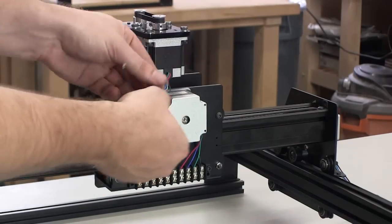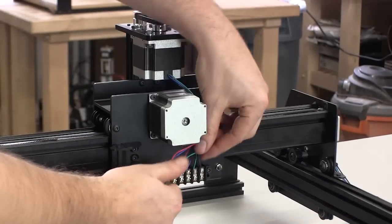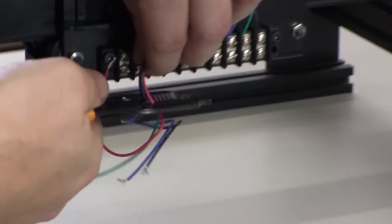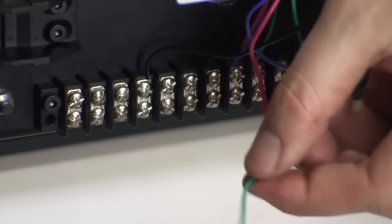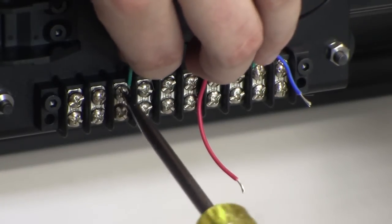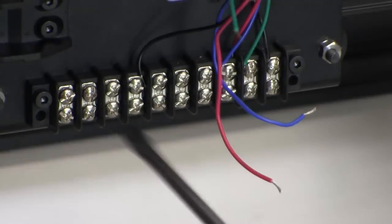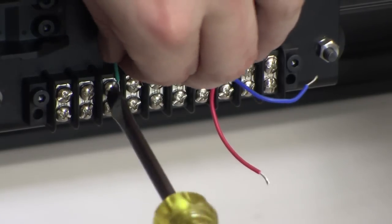Next repeat the process with the Z-axis motor, being sure to leave yourself enough slack to thread the wire around the X-axis motor. Use the same wiring pattern from left to right: red, blue, green, black.